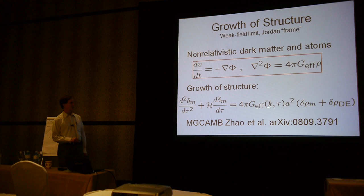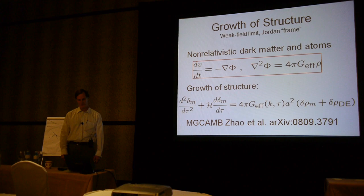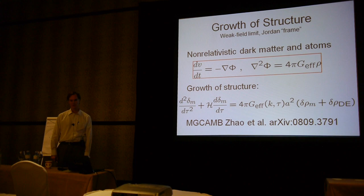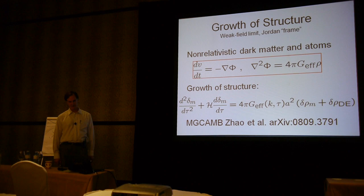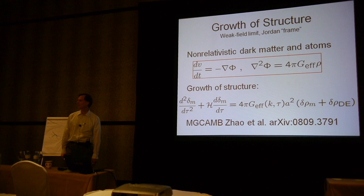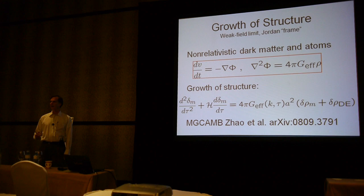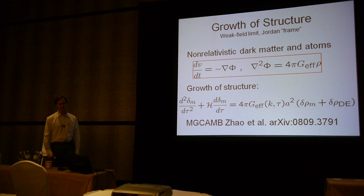The growth of structure also depends on source terms—not just matter, but variations in dark energy or additional fields, which might represent effective energy fluctuations of the scalar field. If you have a model for these functions, or perhaps neglect them, and a model for the scale and time dependence of the gravitational coupling, it is straightforward to integrate this equation and make predictions for how modified gravity would affect transfer functions. This has been done nicely by Chalot Law, who incorporated modified gravity in parameterized form into the CAMB code.